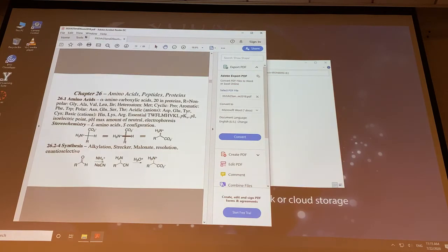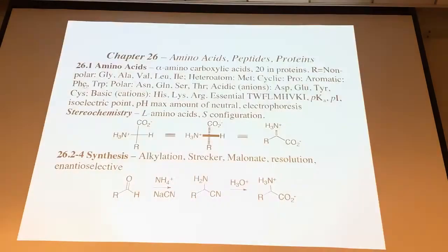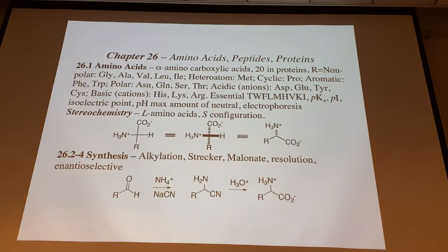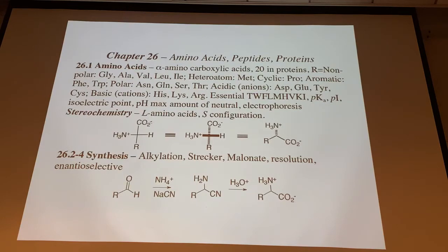Here's the outline for chapter 26: amino acids, peptides, proteins. We start with the 20 amino acids — adding an amine to a carboxylic acid. Alpha amino carboxylic acid, carboxylate, zwitterion form. We often draw it in this projection where you have the highest oxidized carbon — the carboxylate at the top — and then the chain coming off at the alpha position. The ammonium group or nitrogen is to the left.